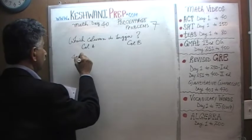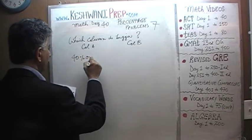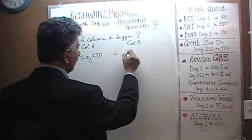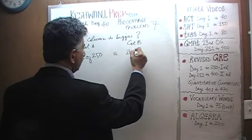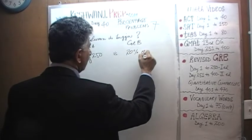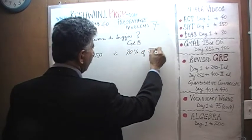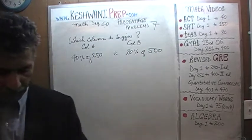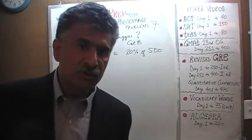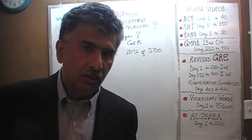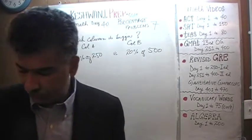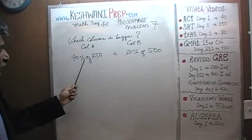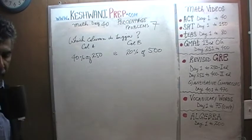40% of 250 versus 20% of 500. What I want you to do is pause the video at this point, do what you have to do, and once you have the answer you can continue watching the video. Which one is bigger: 40% of 250 or 20% of 500?